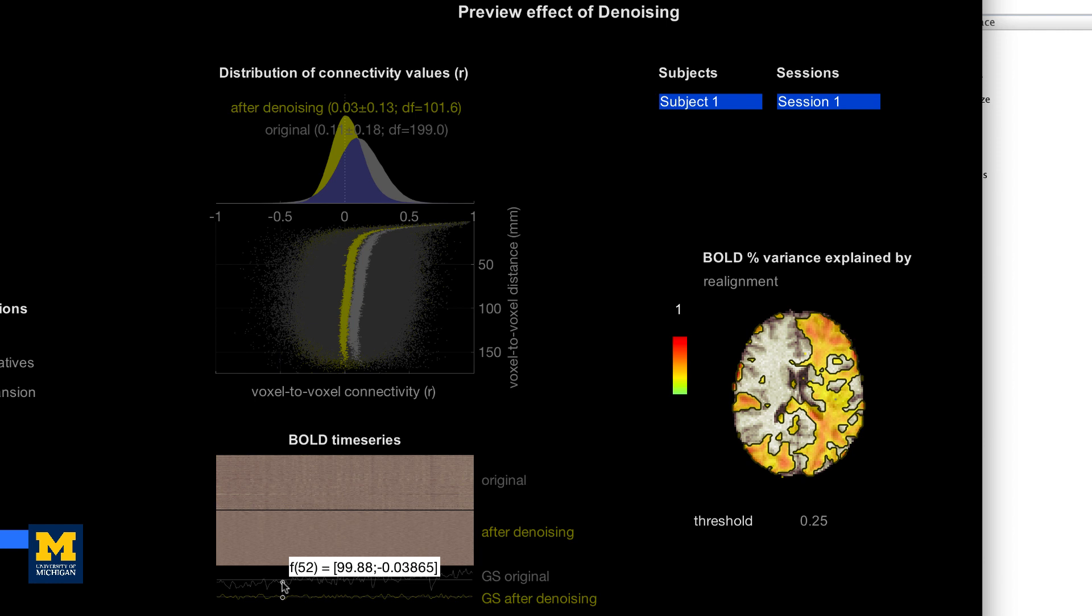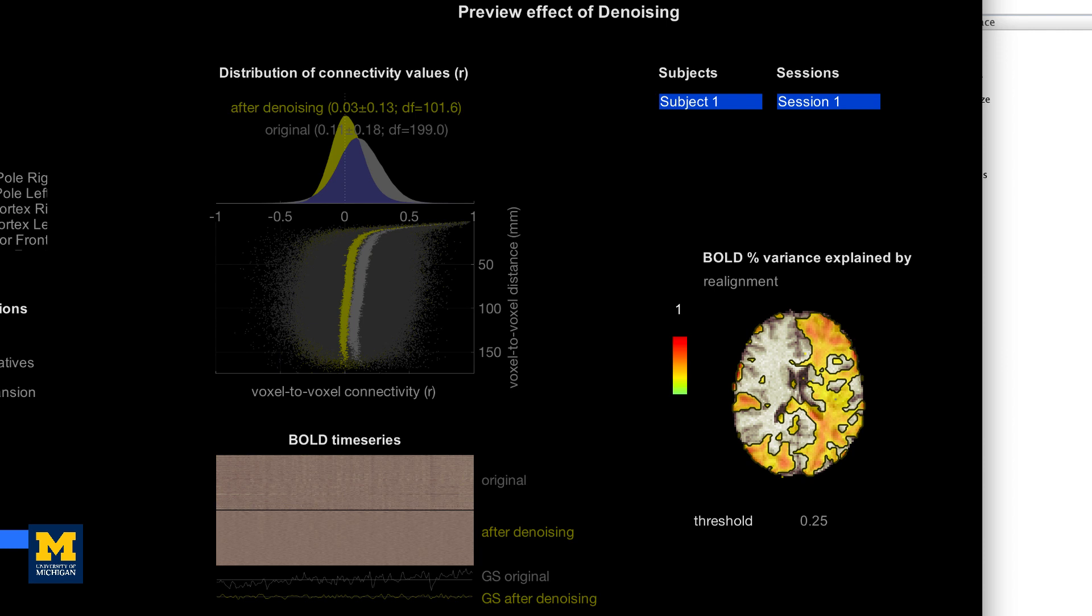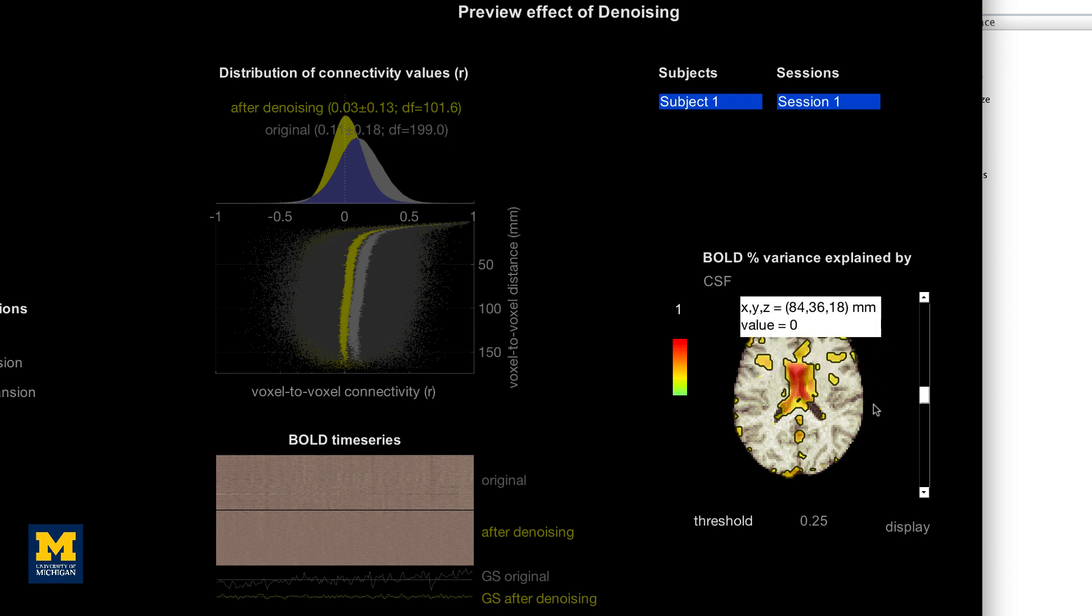Lastly, the preview brain on the right hand side shows the percent of variance in the BOLD signal explained by the currently highlighted confound regressor. The loading of the explained variance should correspond to the regressor that is highlighted. For example, without me showing you, can you guess what this confound regressor represents? Do you think it is movement, the white matter components, or the cerebral spinal fluid components, and why?